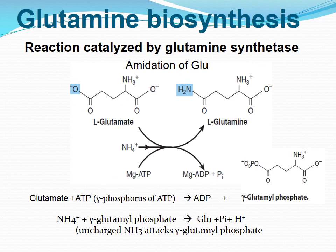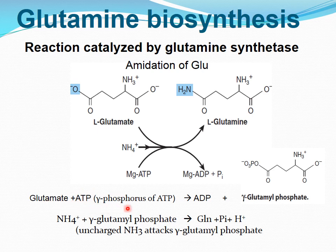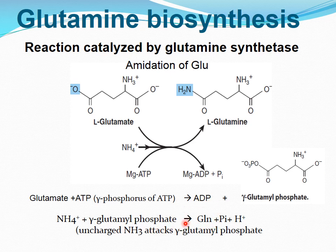In glutamine biosynthesis, the amidation of glutamate to glutamine is catalyzed by glutamine synthetase. This reaction involves the intermediate formation of gamma-glutamyl phosphate, following the ordered binding of glutamate and ATP. The glutamate attacks the gamma phosphorus of ATP, forming gamma-glutamyl phosphate and ADP. Ammonium ion then binds, and uncharged NH3 attacks gamma-glutamyl phosphate, with release of inorganic phosphate and a proton from the gamma amino group of the tetrahedral intermediate, allowing release of the product glutamine.